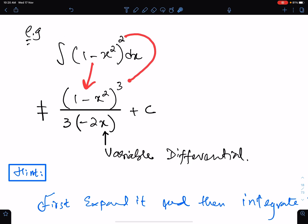Here, you have to add 1 in power, divide function by the resultant power, and divide function by differential of this function.